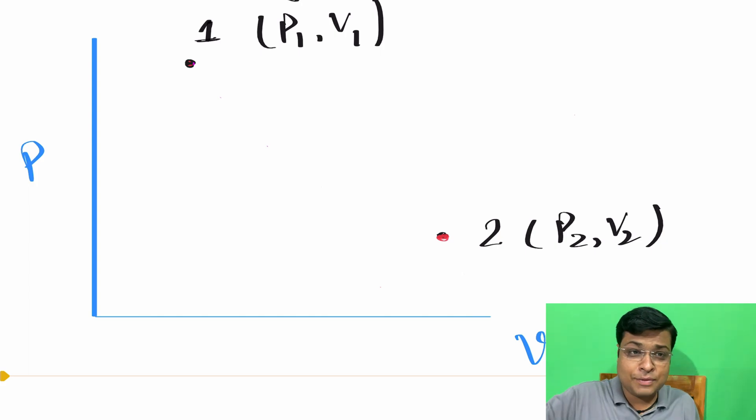But you cannot draw a curve between 1 and 2, because if you want to draw a curve, you need all the intermediate points between 1 and 2. Then only you will be able to draw a curve. But you don't have intermediate points because the system works so fast.